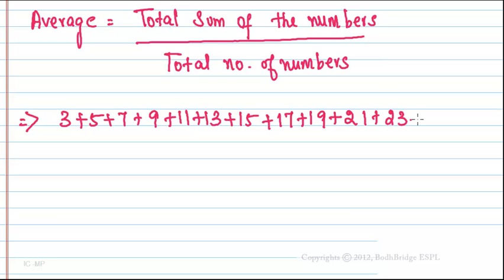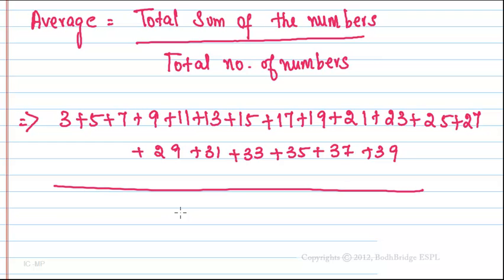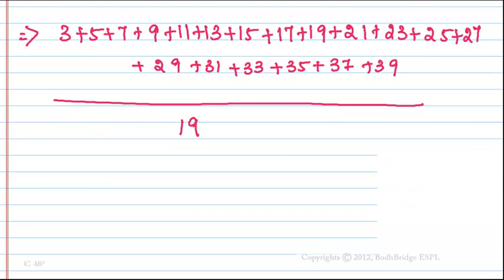Plus 23 plus 25 plus 27 plus 29 plus 31 plus 33 plus 35 plus 37 plus 39 divided by total number is 19. So sum of all these numbers you will get 399 divided by 19.